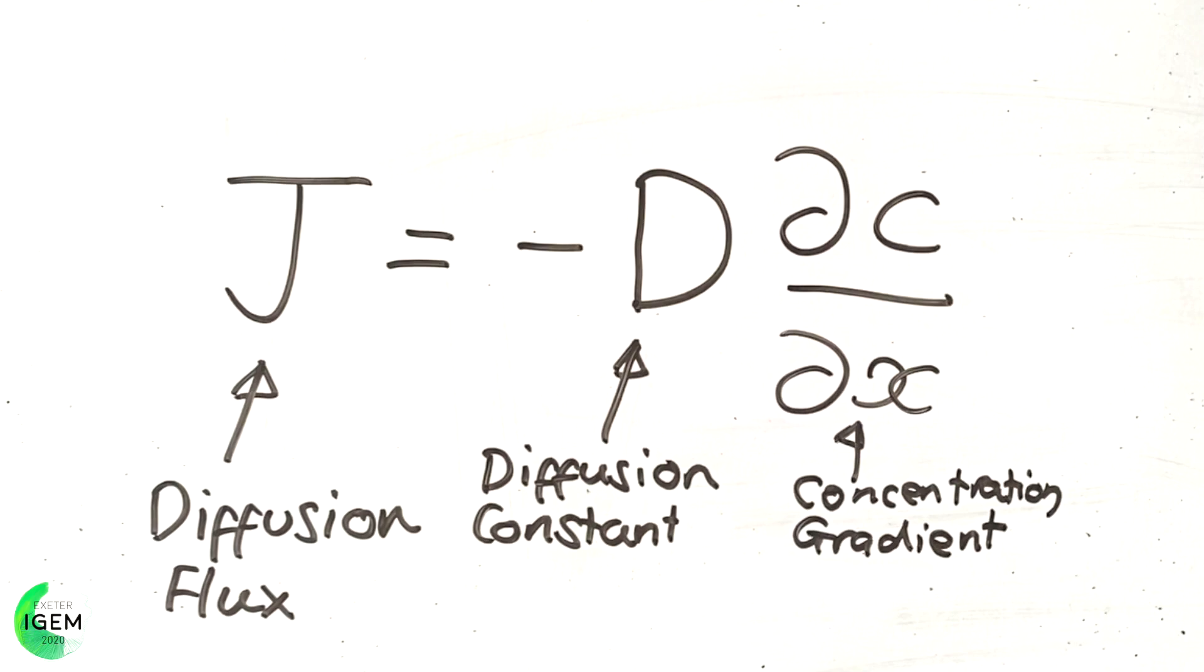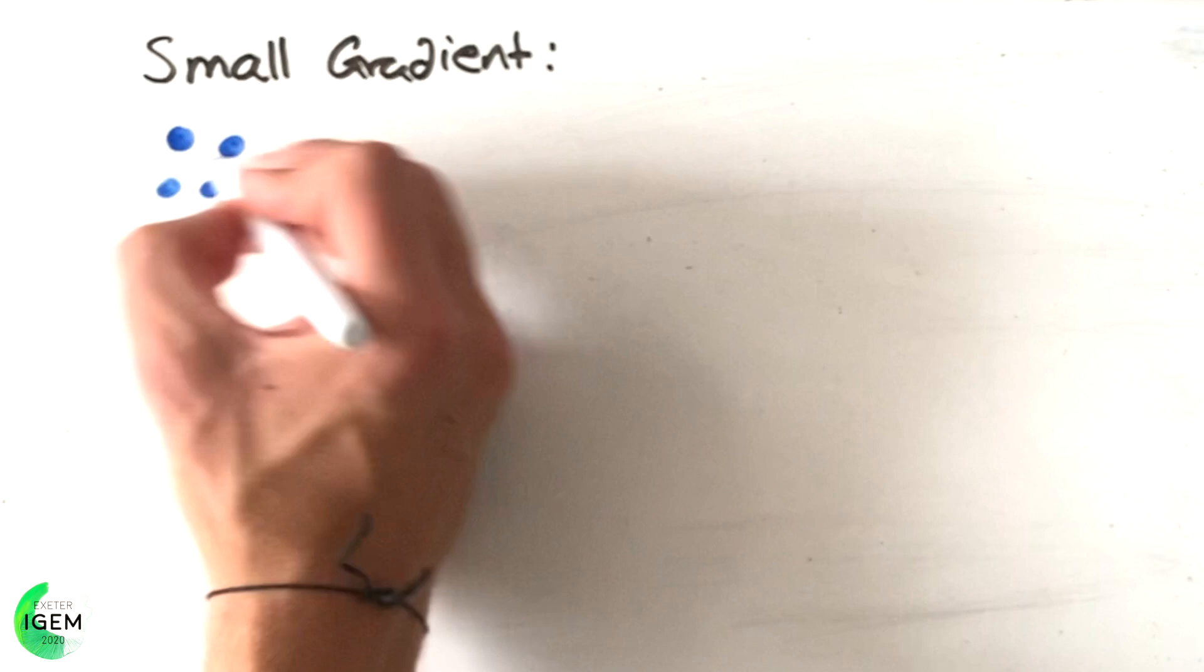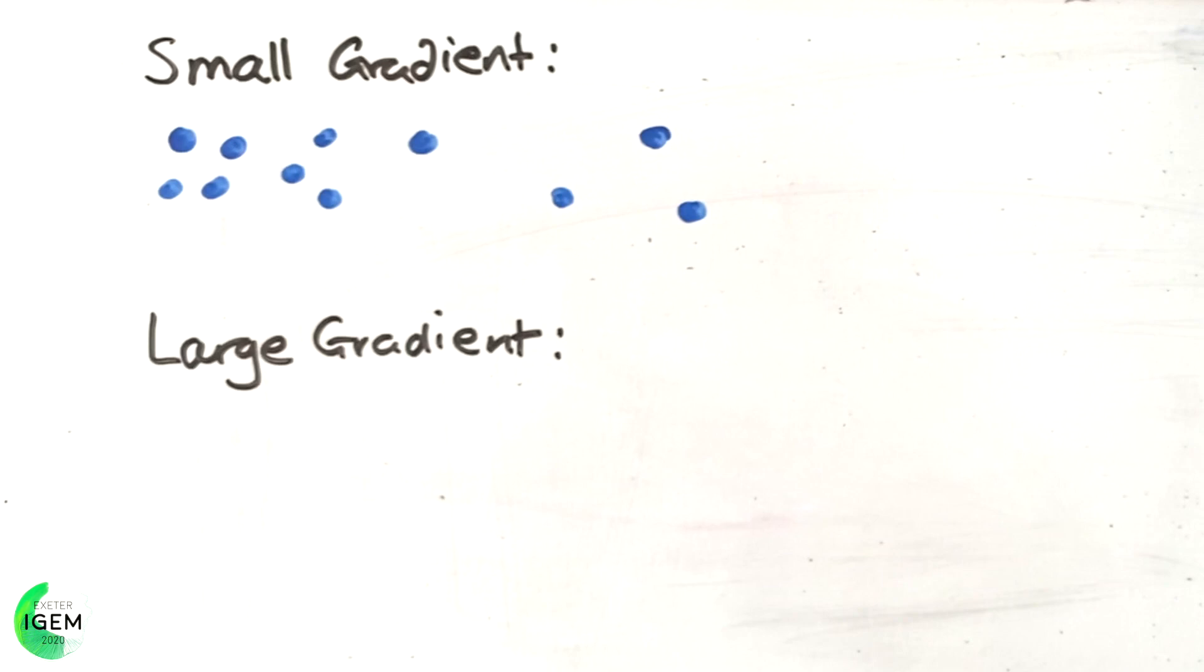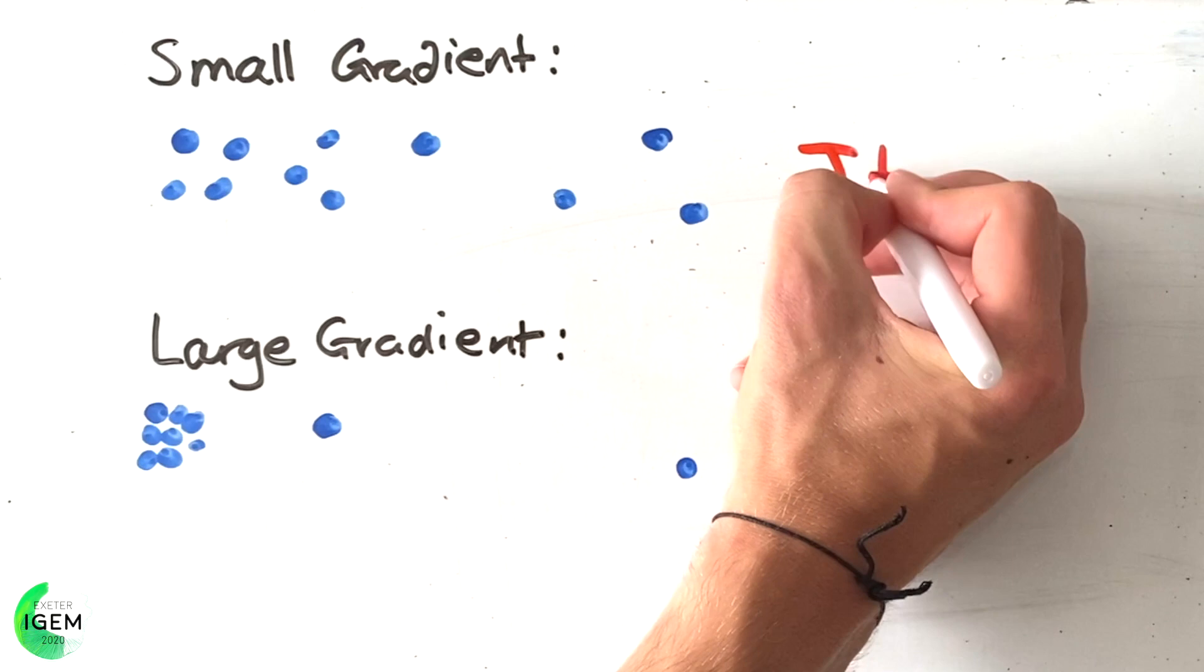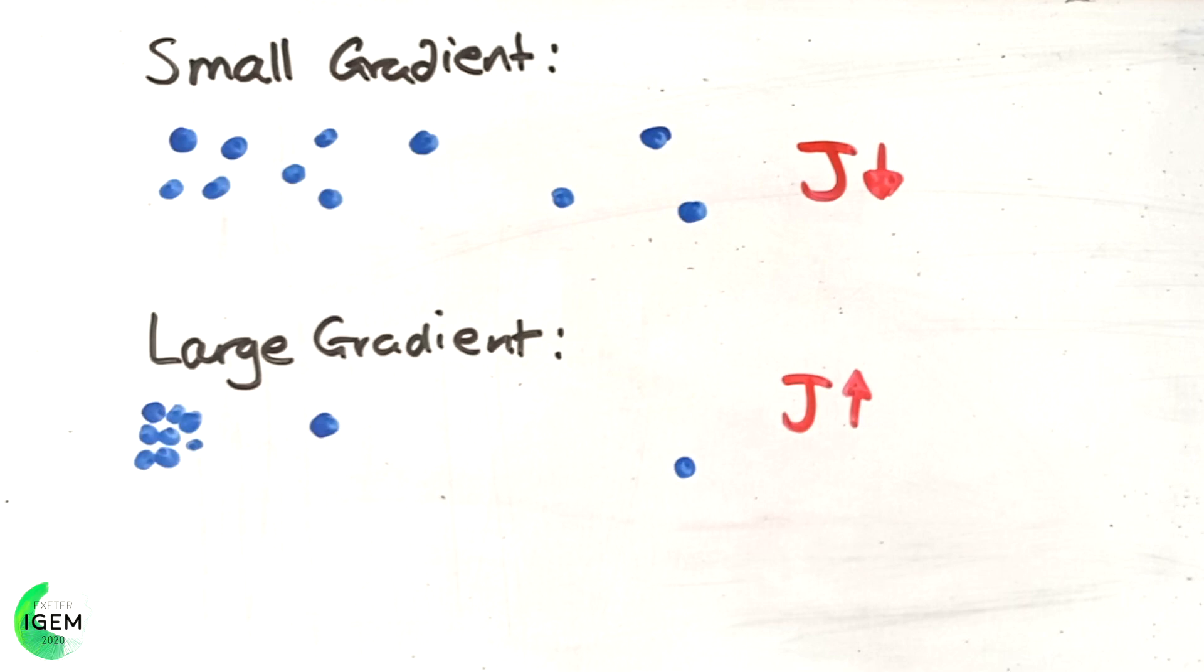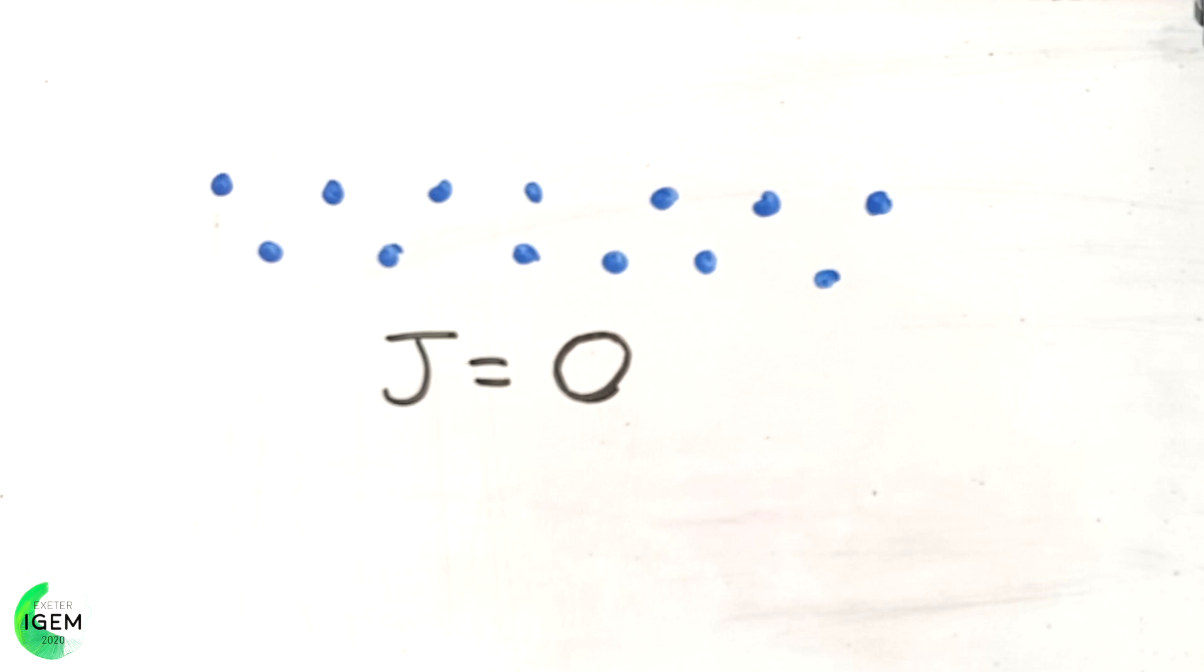If you have a small concentration gradient, that basically means that all of the molecules are fairly well evenly distributed. However, if you have a large concentration gradient, that means that all of the molecules are scrunched up together in one side. So for a small concentration gradient, J is small, but for a large concentration gradient, J is large. The diffusion flux will be zero when all of the molecules are evenly spread out.